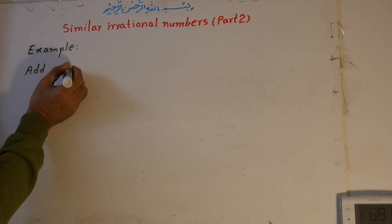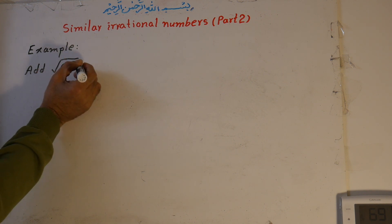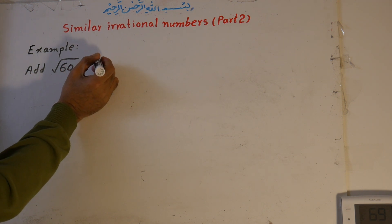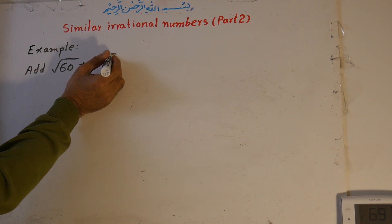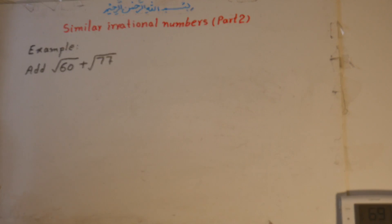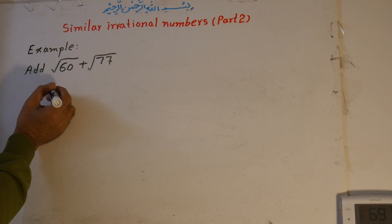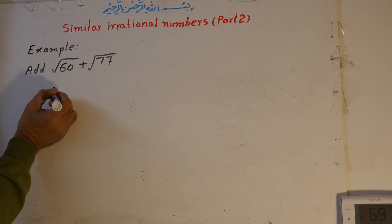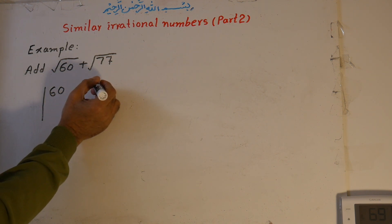Our first example is: add √60 plus √77. What we do is we separate both of them and factor them — we factor 60 and also 77.